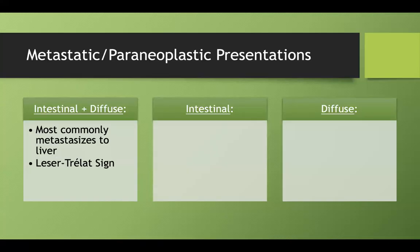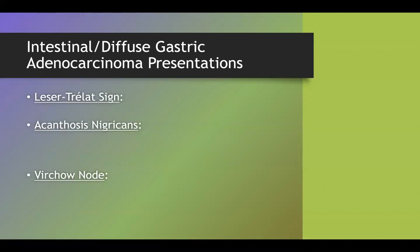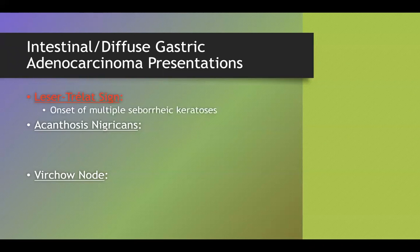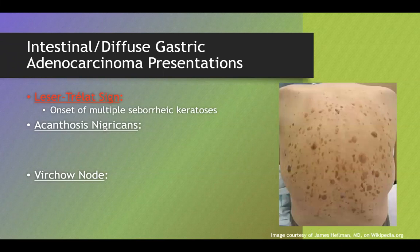There are three paraneoplastic presentations to know: the Leser-Trélat sign, acanthosis nigricans, and the Virchow node. The Leser-Trélat sign is a sudden onset of multiple seborrheic keratoses — darkened skin changes. These can be normal in older age, but on a test, if someone presents with weight loss, early satiety, abdominal pain, and new onset of these skin changes, strongly consider gastric adenocarcinoma.